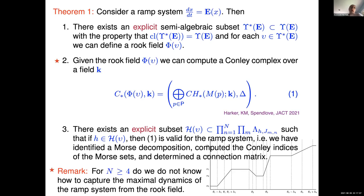Here's a remark — truth in advertising. This theorem is correct without the star, except that if we're working with systems where N is greater than or equal to four — higher dimensional systems — then I know that at the moment we are not fully exploiting the Rook field information, and so we're losing information about the dynamics. I'll give an example where we get complete information, but that's in terms of a two-dimensional example. For higher dimensional problems, we still have work to do to make sure we're not losing information.